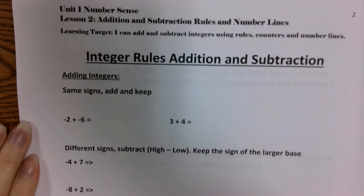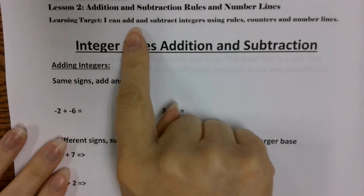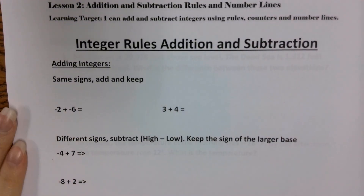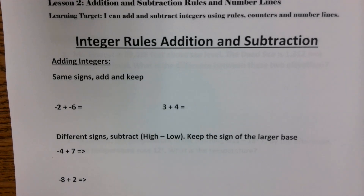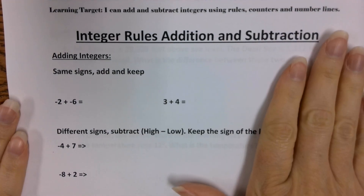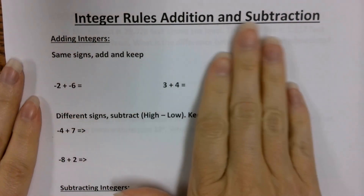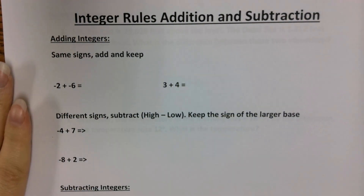We're reviewing our integer rules. Our learning target for today: I can add and subtract integers using rules, counters, and number lines. You will have to utilize number lines and counters to model what integer addition and subtraction looks like. Before we go on, a quick review over the rules. You get to use calculators this time — you don't have to worry about a no-calculator section on any tests this year. The rules are good to know, but if you get confused, you have a calculator as a backup.